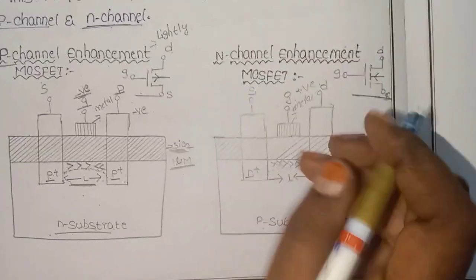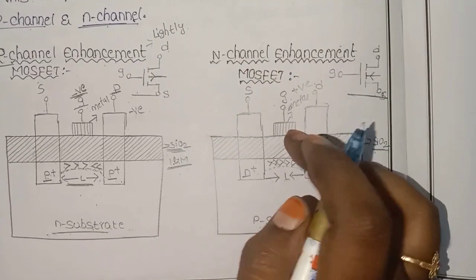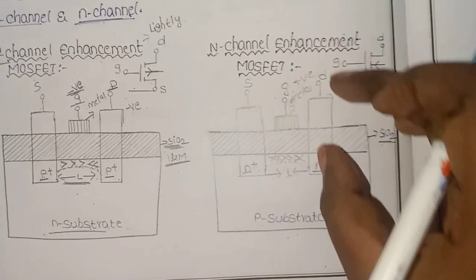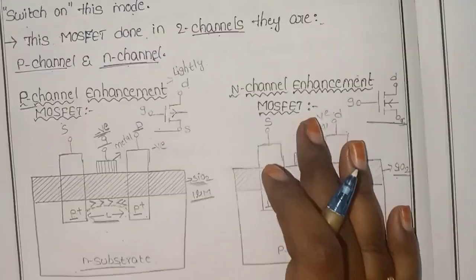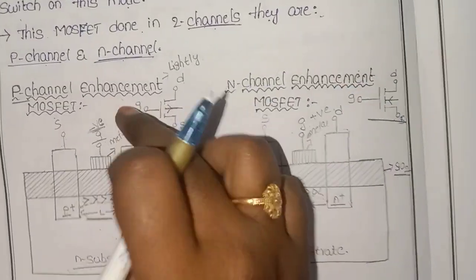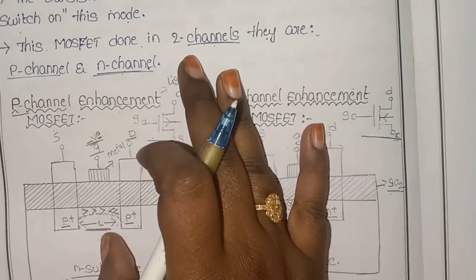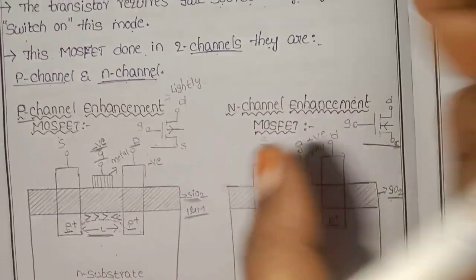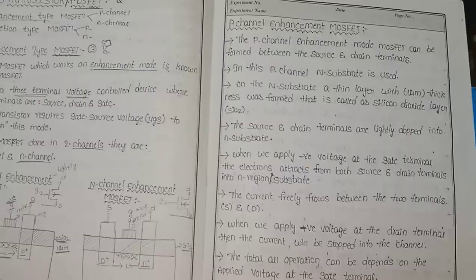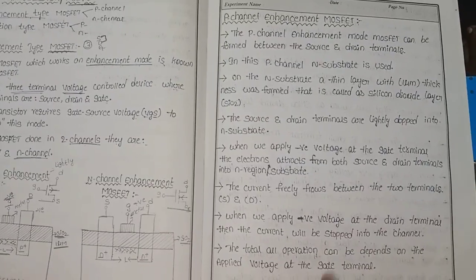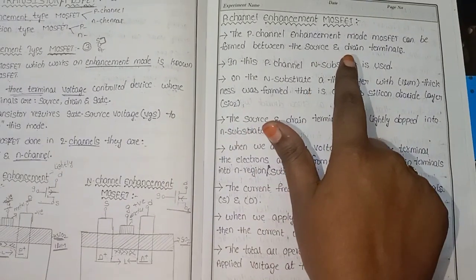The gate is made using metal. This is the source and this is the drain. This is the enhancement mode, and this is the depletion mode. This is the P-channel enhancement mode MOSFET.